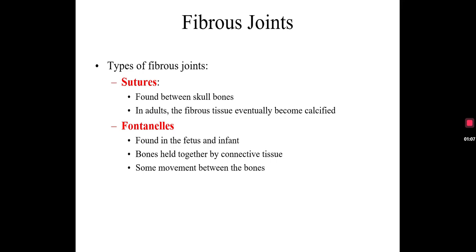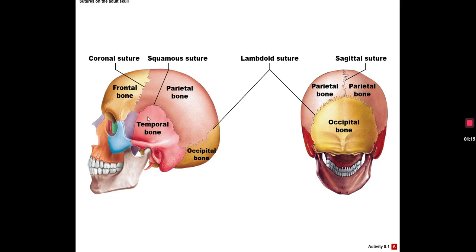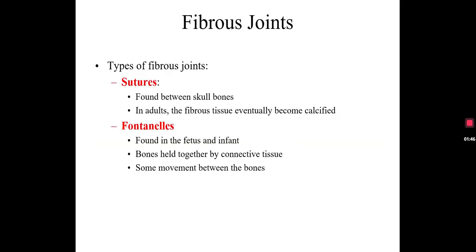We saw sutures between the skull bones. In adults, the fibrous tissue will eventually fuse and become calcified. Going back to some pictures from osteology, we have the frontal bone, the parietal bone, and right here is the coronal suture. Inside there would be fibrous tissue — collagen fibers. We also looked at the squamous suture, and from a posterior view, the lambdoid suture. Then we can see the sagittal suture. All of those sutures have collagen fibers in between the bones.